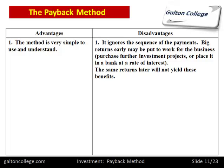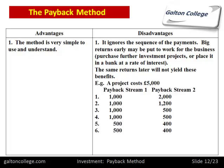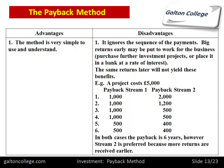We much prefer our return sooner rather than later. Say a project costs £5,000 and we have two possible payback streams: stream one has £1,000 for the first four years; stream two has £2,000, £1,200, £500 and £500 for the first four years. Stream two is preferred because we get more of the money back in the first two years — even though both have the same payback period, stream two is preferred because the returns are received earlier.